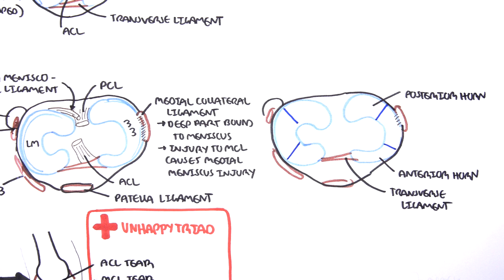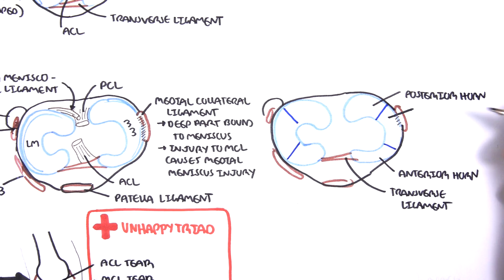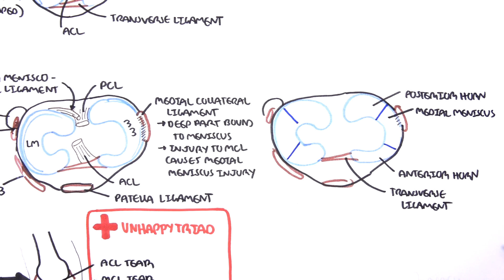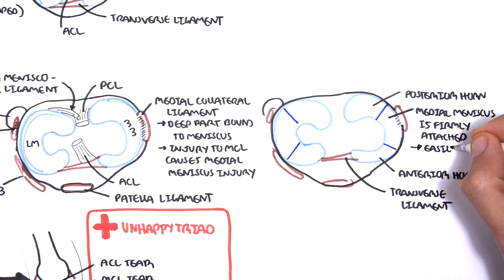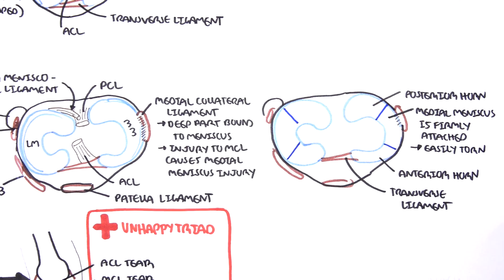It's also important to remember that compared to the lateral meniscus, the medial meniscus is firmly attached to the tibia and it's not very mobile. Thus it is easily torn.